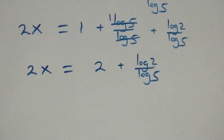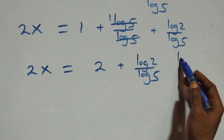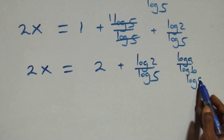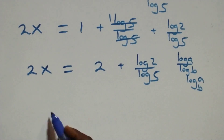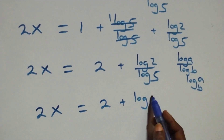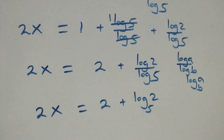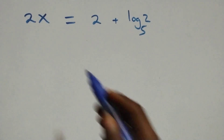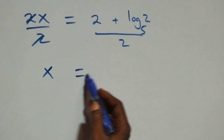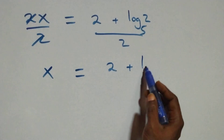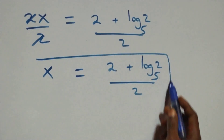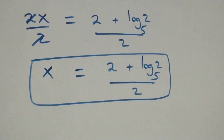Here we apply the change of base rule: log a over log b is the same thing as log a to base b. So two x equals two plus log two to base five. Then we divide both sides by two — the twos cancel — and we have x equals two plus log two base five, all over two.